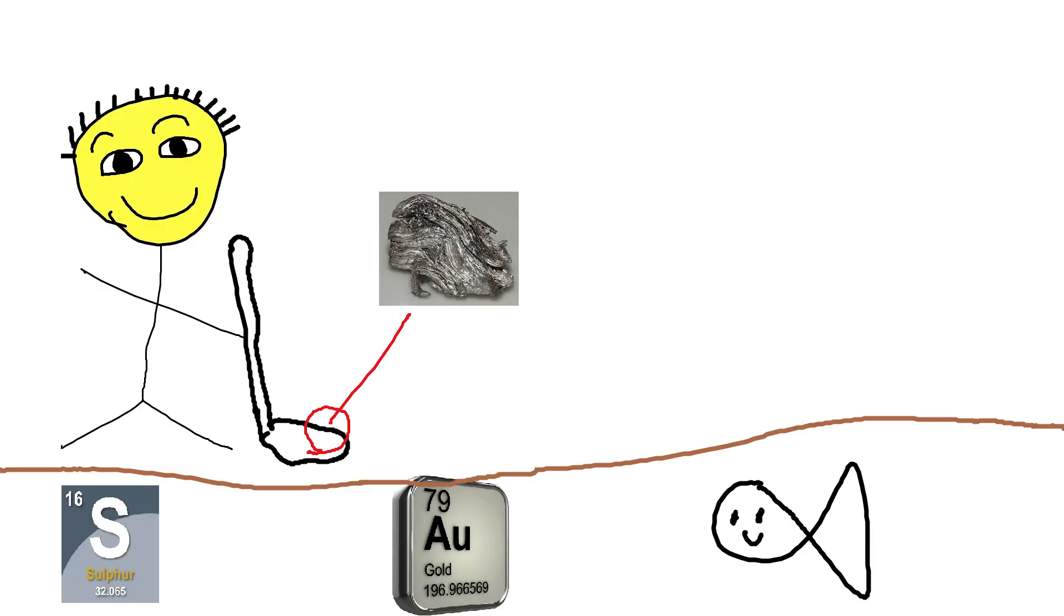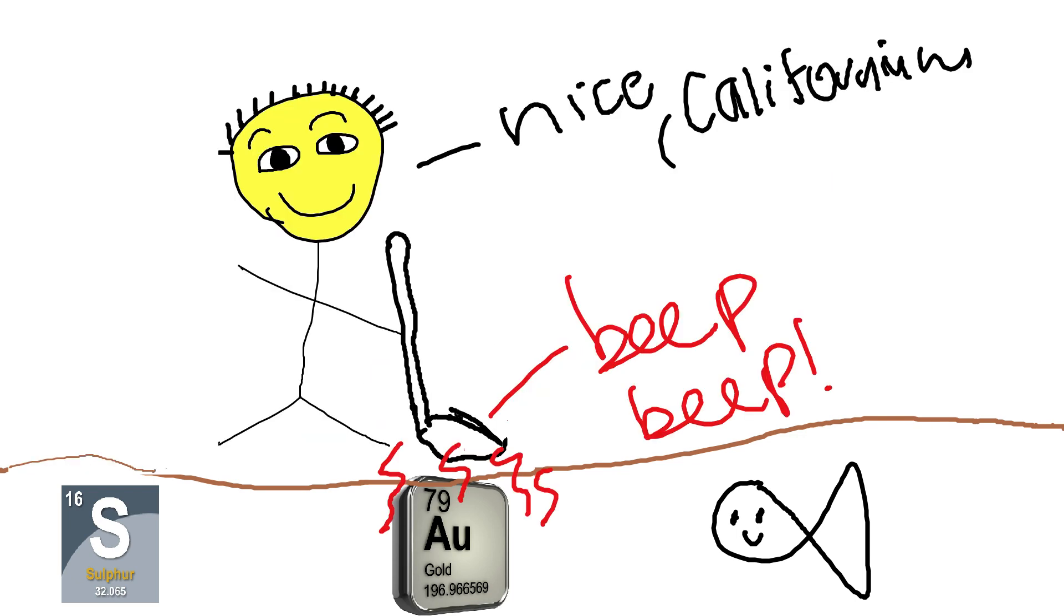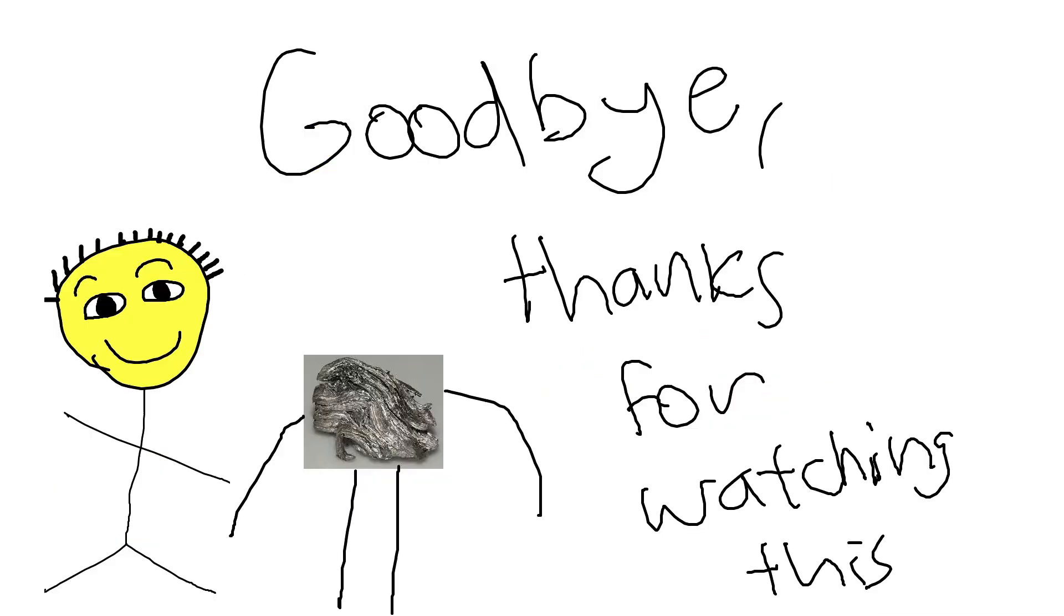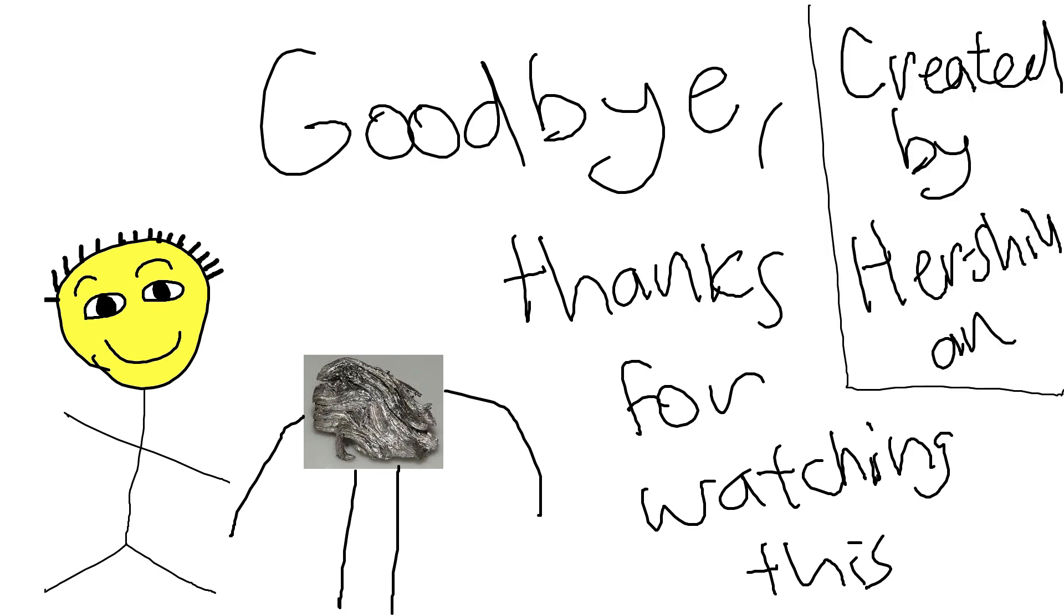Californium is also useful for detecting metals, as it has a high atomic number and large number of neutrons which causes penetrating neutrons that can easily be absorbed by metal atoms, creating a strong signal that can be detected. The end. Hope you now know more about Californium. Goodbye.